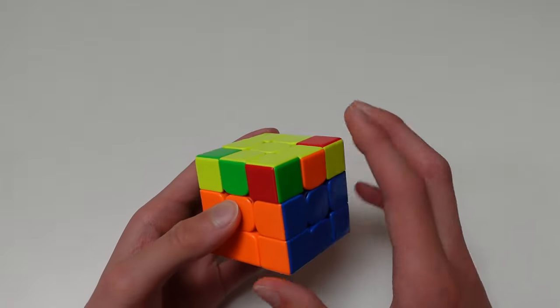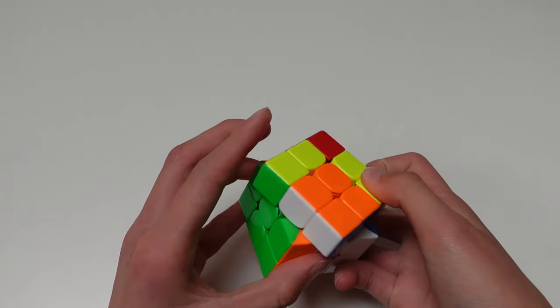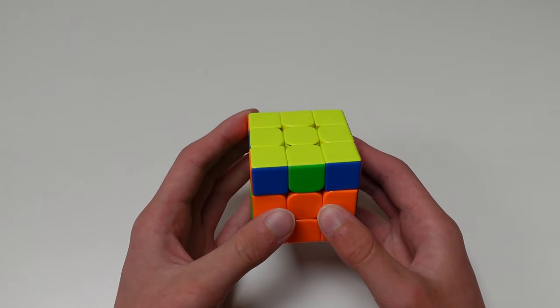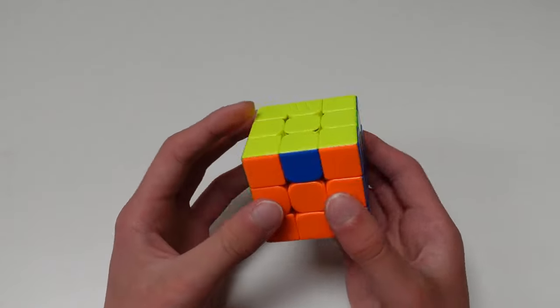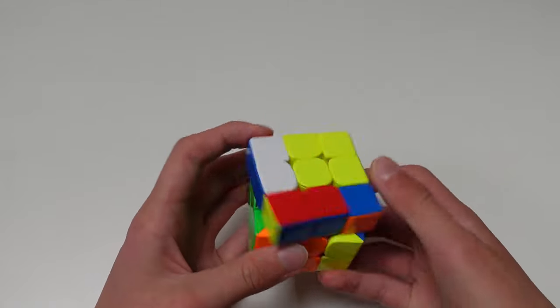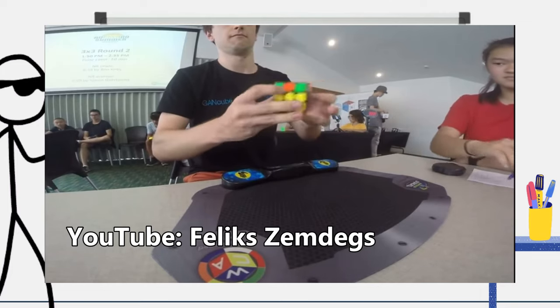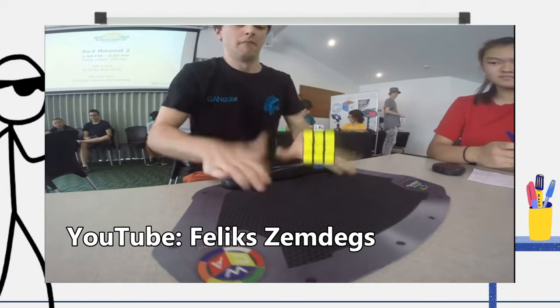You can either do 2-look OLL, which requires 8 algorithms, or 1-look OLL, which requires 57 algorithms. Finally, you permute the last layer. Again, you can do 2-look PLL, which is 6 algorithms, or 1-look PLL, which you need 21 algorithms. In top speed cubing, CFOP is by far the most popular method and has been for many years now.